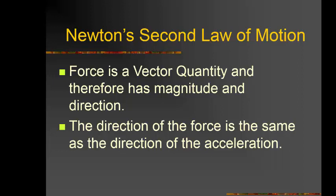A vector quantity has magnitude and direction. For example, a force of 5 Newtons is just a magnitude. But '5 Newtons acting in the direction of North, or East, or making an angle of 45 degrees with the X-axis' specifies both magnitude and direction. The direction of force is the same as the direction of acceleration.